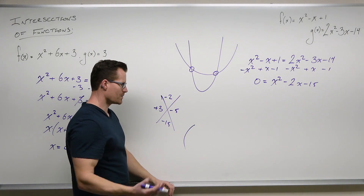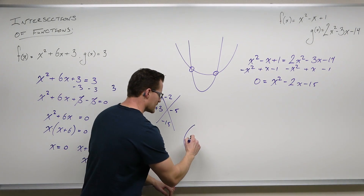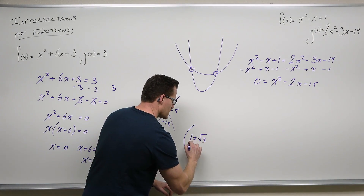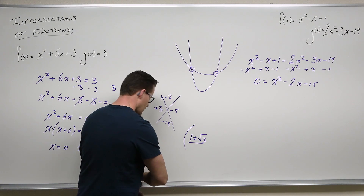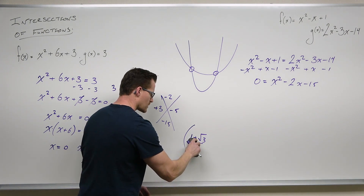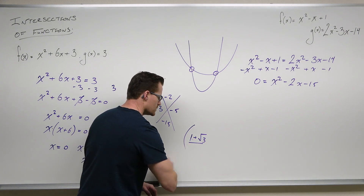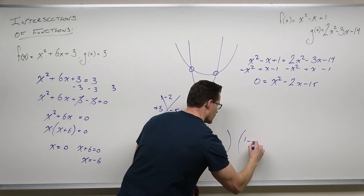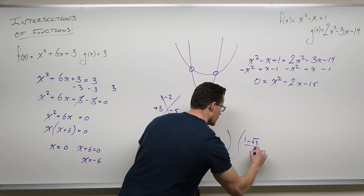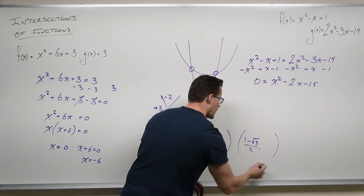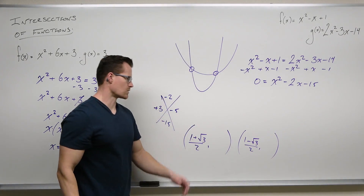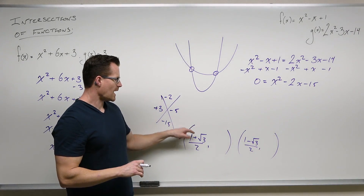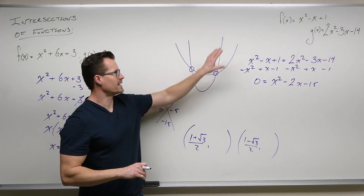Because can you imagine if you had something like 1 plus or minus square root of 3 over 2 — something you could easily get from the quadratic formula — how would you plug that in?